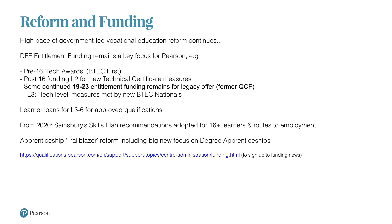One of the main changes coming is the Sainsbury Skills Plan — a wide-ranging reform report whose recommendations the government has fully adopted. This covers routes to employment and higher education for learners aged 16 and above. Trailblazer apprenticeships have already started and some are already going live. That reform has a massive impact if you are delivering apprenticeships. Degree apprenticeships are something the government is very keen to push, and we hope the Higher Nationals can at least in part meet that agenda.